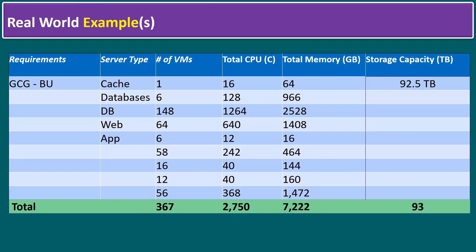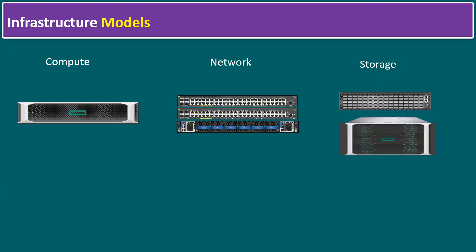Before jumping into infrastructure sizing, we should discuss with our internal team and finalize the infrastructure models. The main components are compute (servers), network devices, and storage devices. For this example, I am using an HPE rack-mount server — the latest model is the HPE DL380 Gen 11. Other vendors like IBM, Lenovo, Fujitsu, and Dell can also be used. As a solution architect, you should have knowledge of server models, network models, and storage models to make sizing and capacity planning easier.